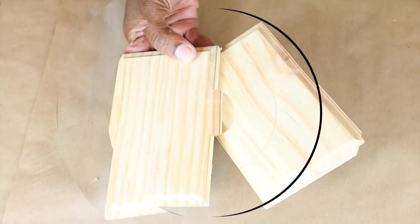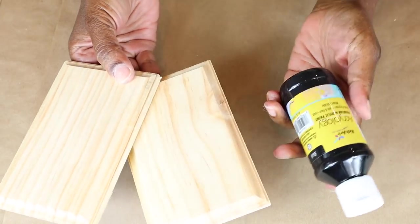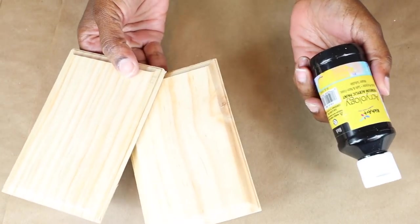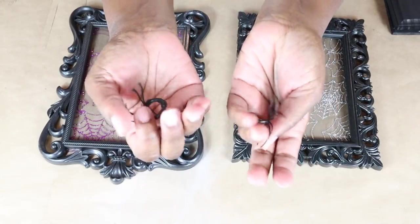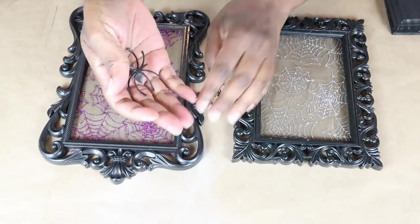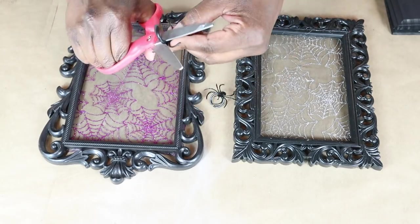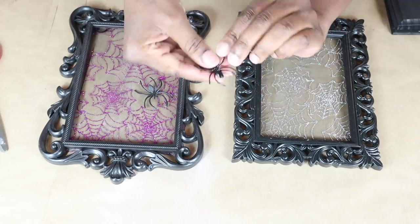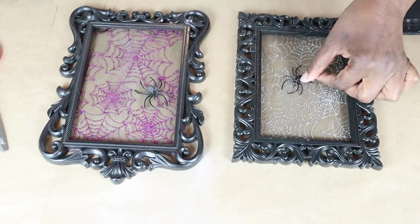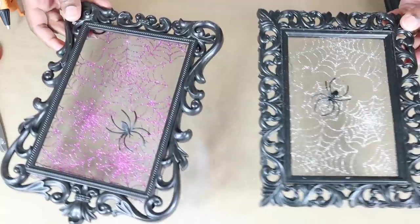You can hang these up on the wall, but I want them to stand up. So I'll be using two of these wood plaques from Dollar Tree, painting them black. While they dry, I'm going to take these two spider rings. I'm going to cut off the ring part and hot glue it down to both frames. Just that easy.